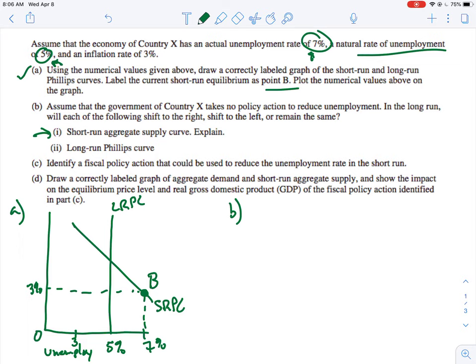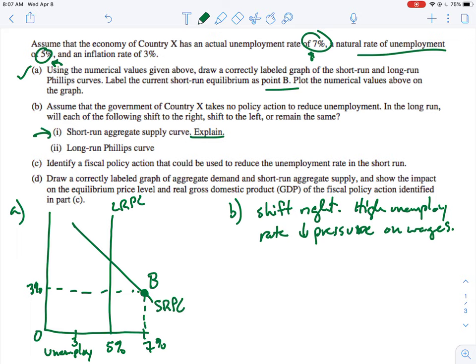So that means we are basically in a recession with higher unemployment than we're supposed to have. So what will happen to the short run aggregate supply curve? You don't have to graph this, you just have to explain it. So it's going to shift right. And the reason is the high unemployment rate puts downward pressure on wages.